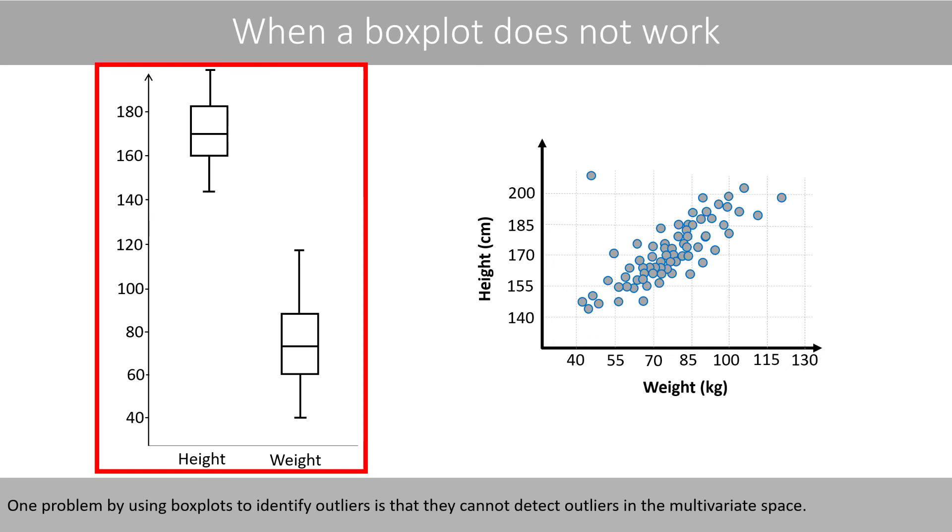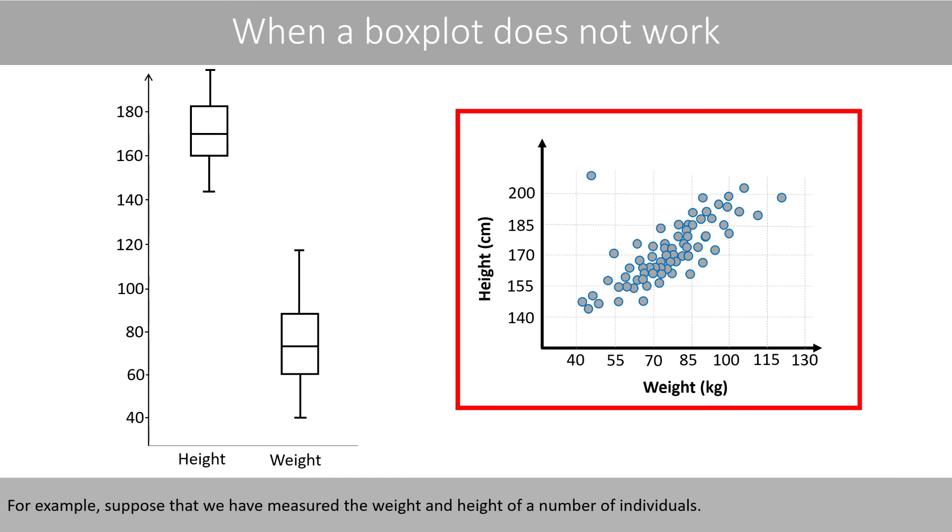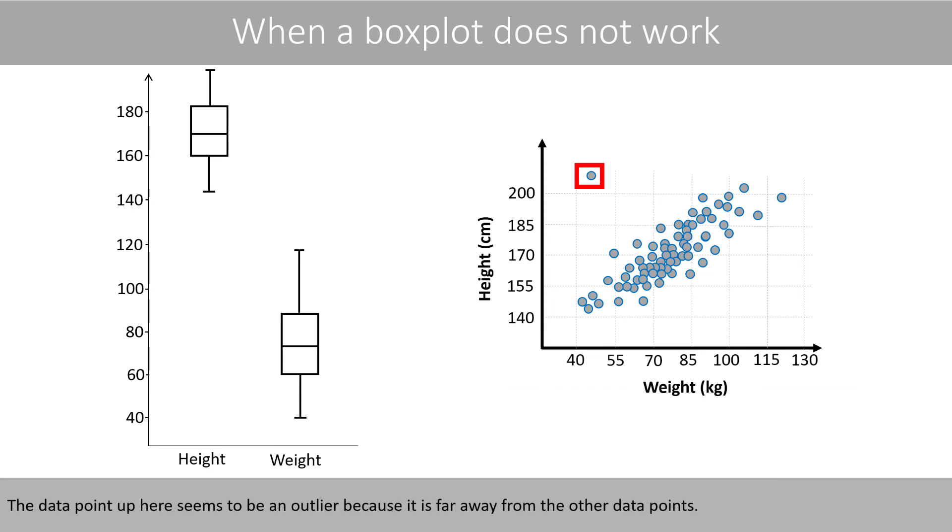One problem by using box plots to identify outliers is that they cannot detect outliers in a multivariate space. For example, suppose that we have measured the weight and height of a number of individuals. The data point up here seems to be an outlier because it is far away from the other data points.